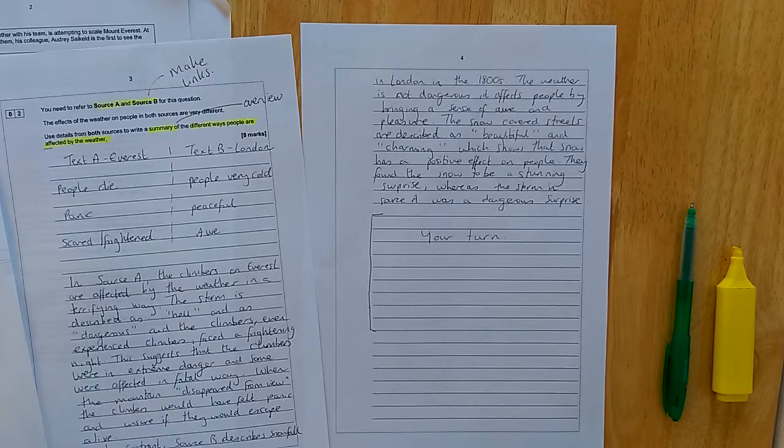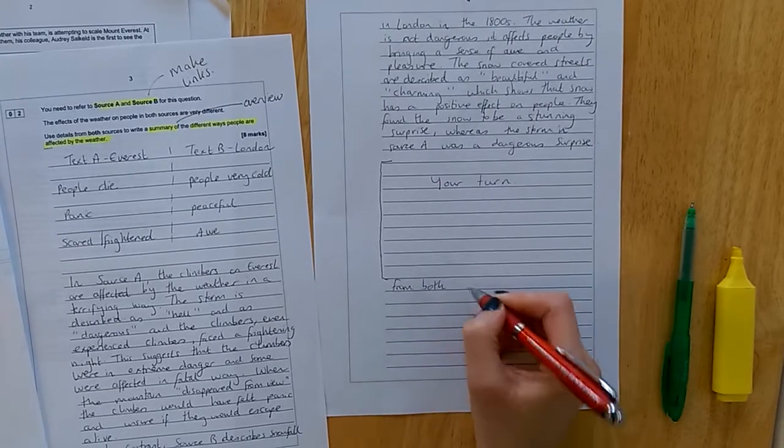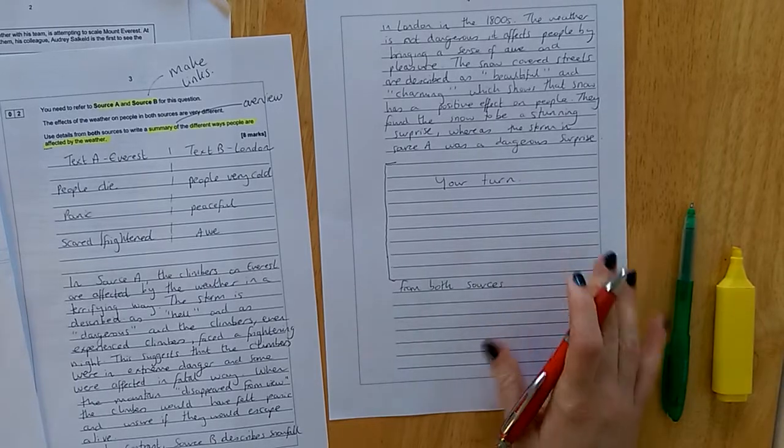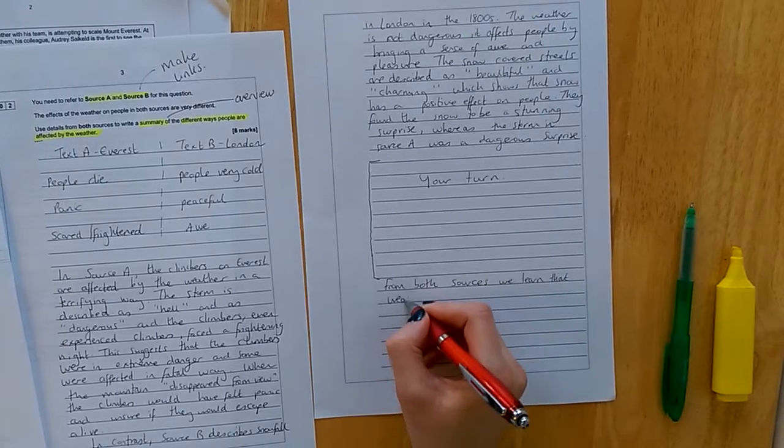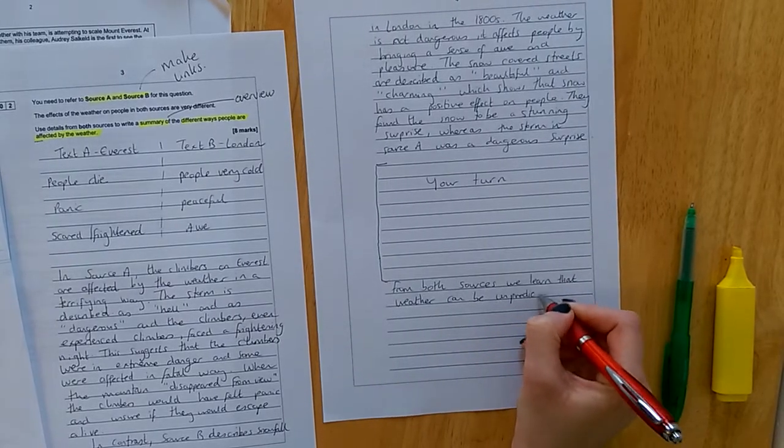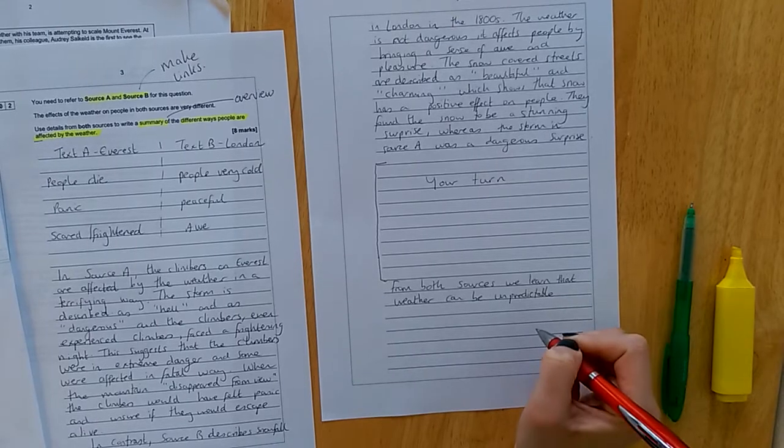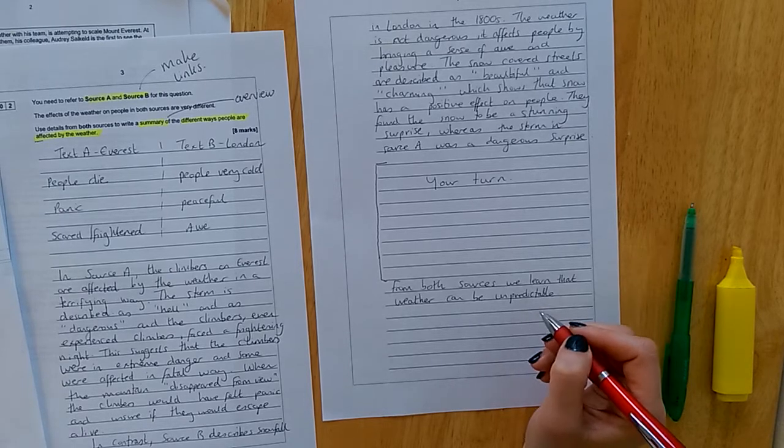To reach the higher mark like we want you guys to do we want you guys to write a perceptive answer. This means that at the end we want you to zoom out to make some inferences about both texts about a wider topic. So today we're thinking about weather. I'm going to finish by saying from both, another comparative word here, from both sources we learn that weather can be unpredictable and then sometimes that's in a terrifying way and sometimes that's in a fun and pleasant way.